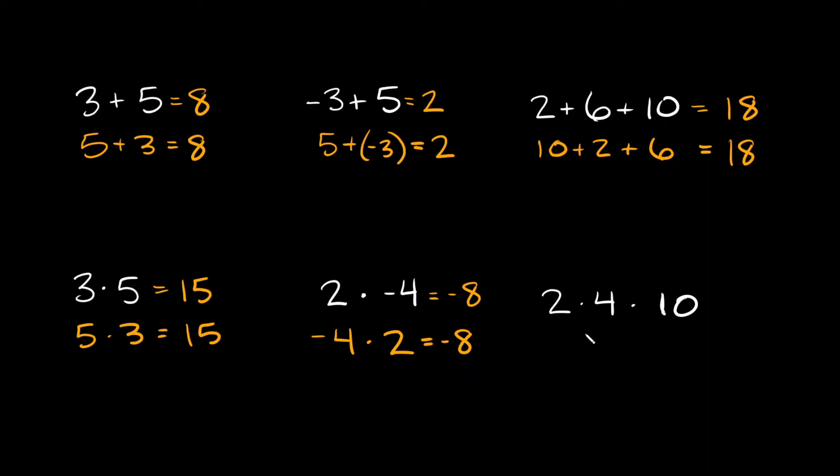And one more example that has three digits, so here we have 2 times 4 times 10. So solving for this, 2 times 4 is 8, and then 8 times 10 is 80. But again, if you switch it around, so if I did 10 times 2 times 4, well 10 times 2 is 20, and then 20 times 4, again it's still 80.